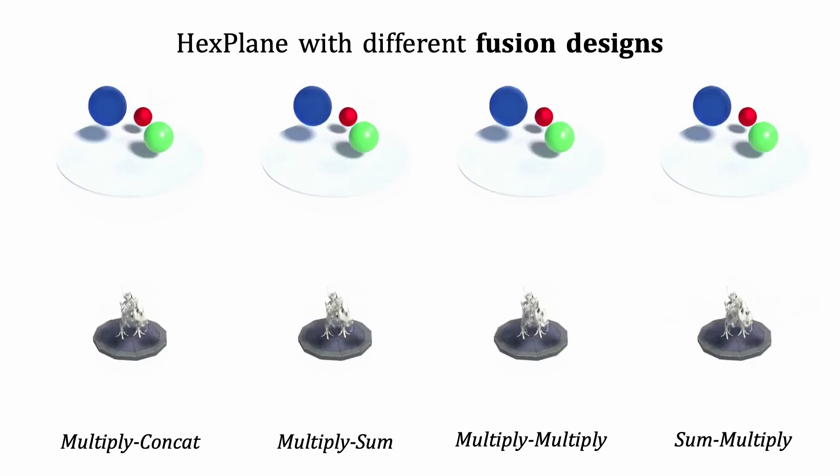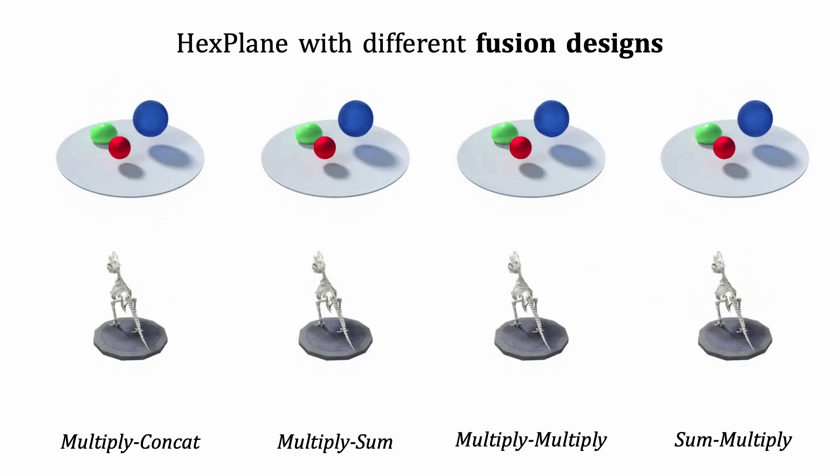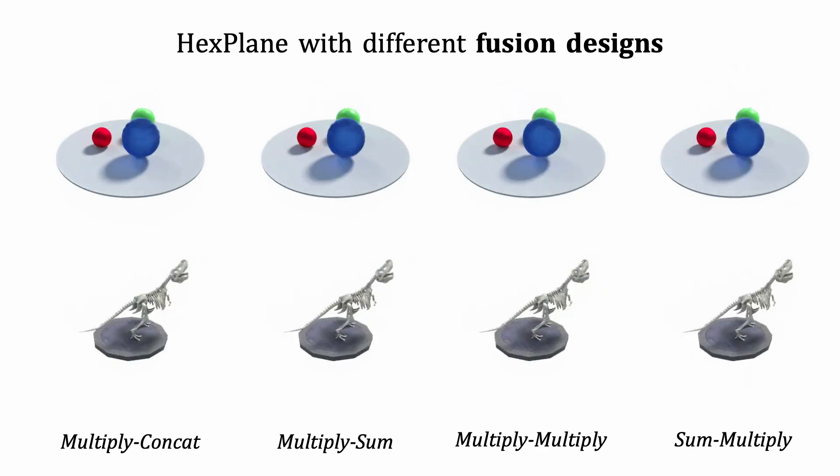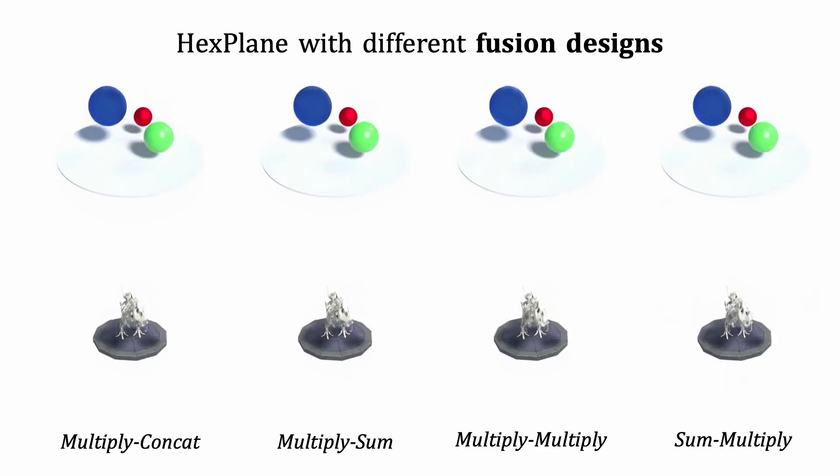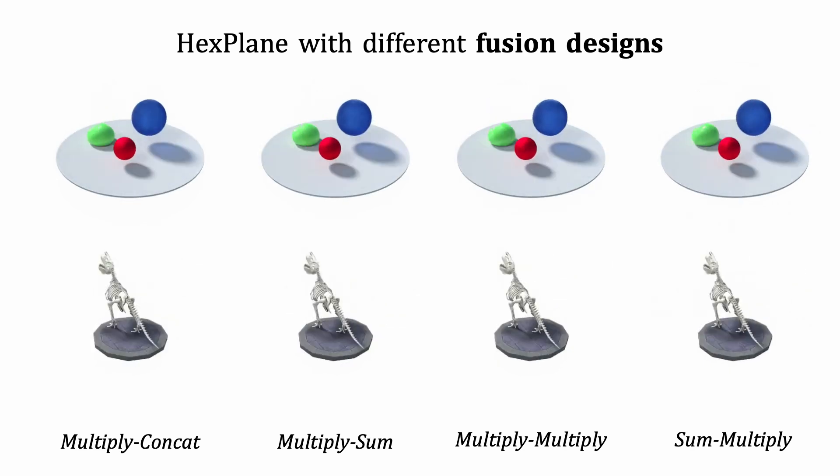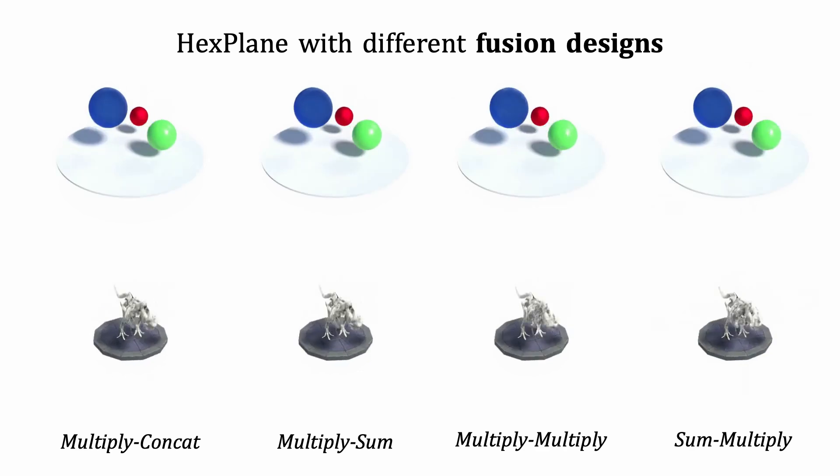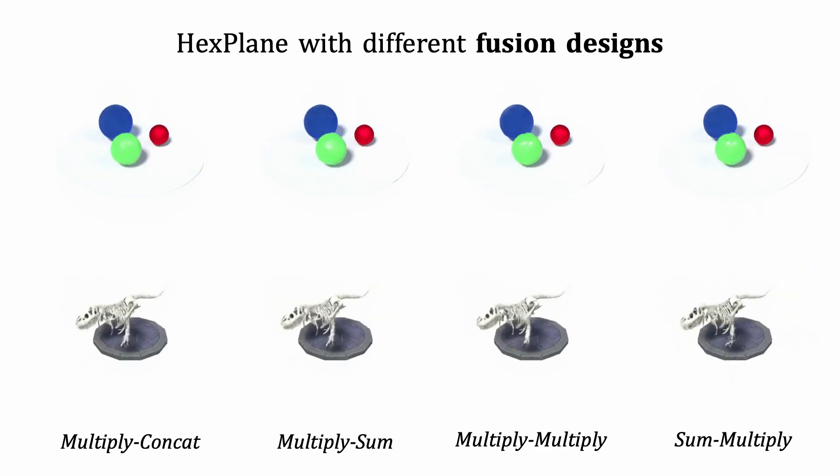HexPlane could work with different fusion designs. In default, we calculate element-wise multiplication of features from complementary planes like X, Y, and Z, T planes, and concatenate the resulted feature vectors into a single feature vector. But other designs like element-wise summation could also lead to promising results.